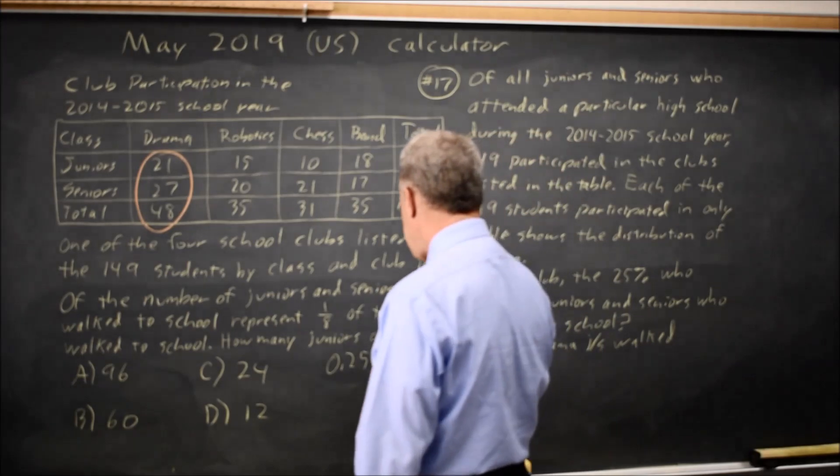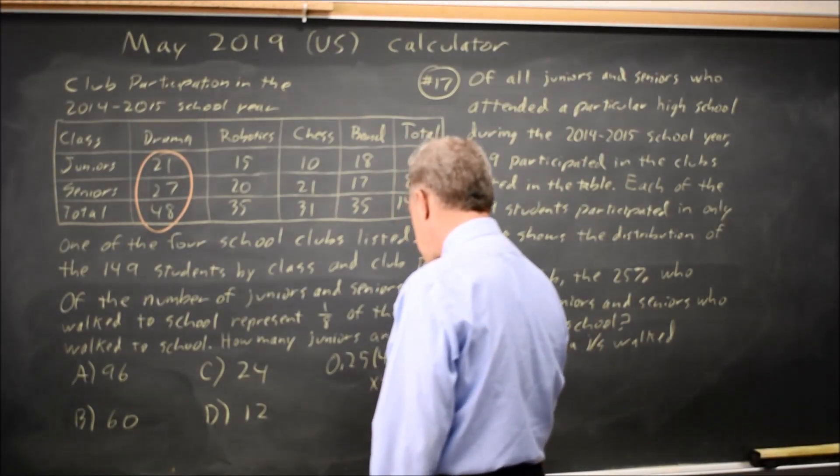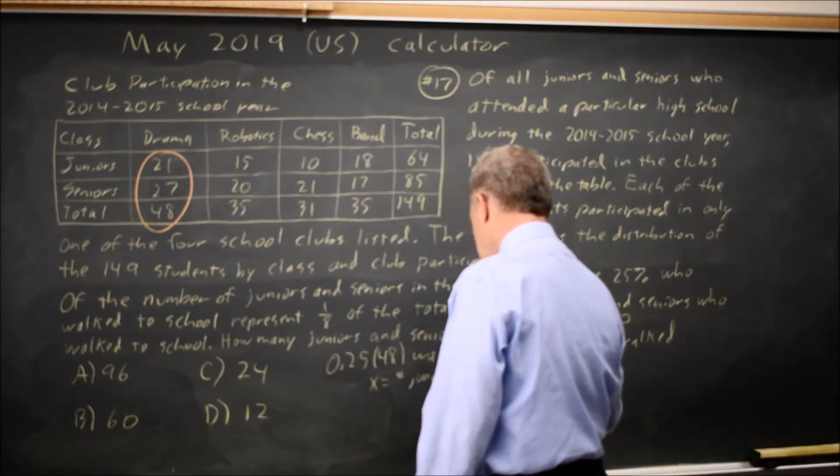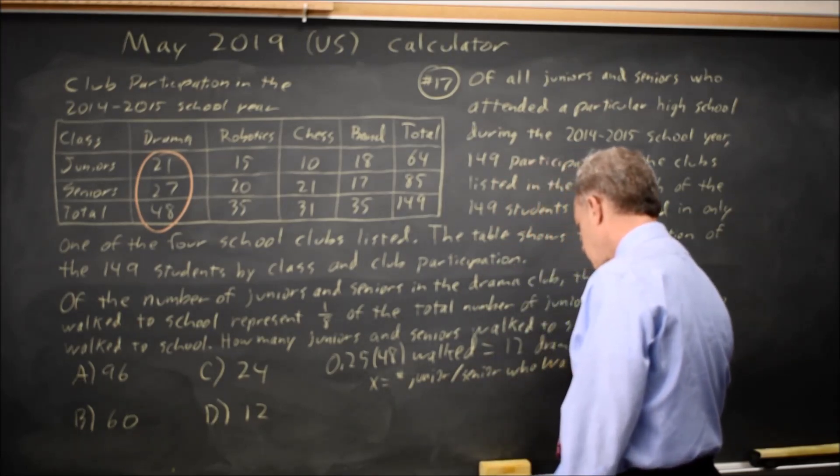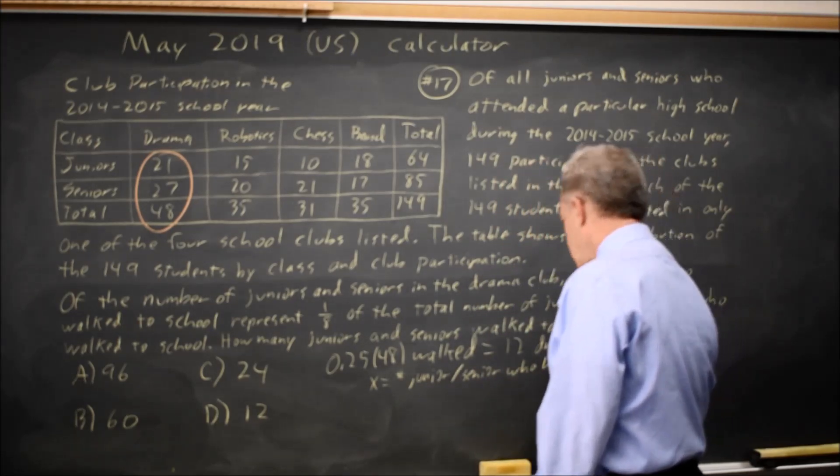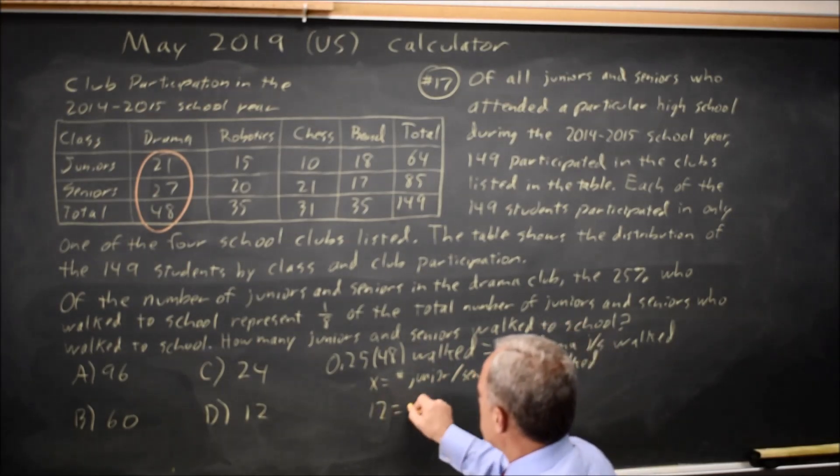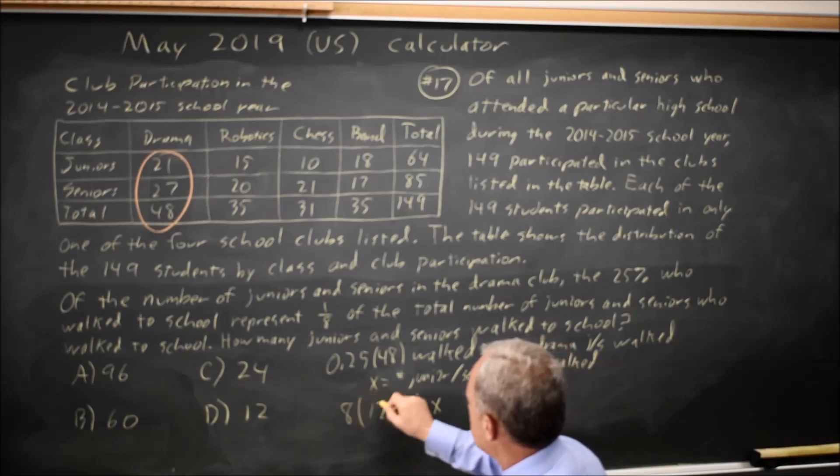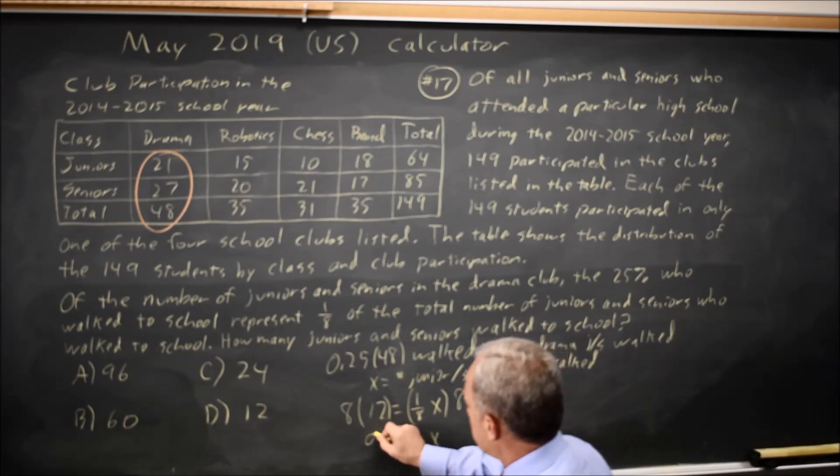So if x is the number of juniors and seniors who walked, 12 is one-eighth of x. To solve for x, I'm going to multiply both sides by eight, because one-eighth times eight is one, so I just leave x on the right. 8 times 12 is 96.